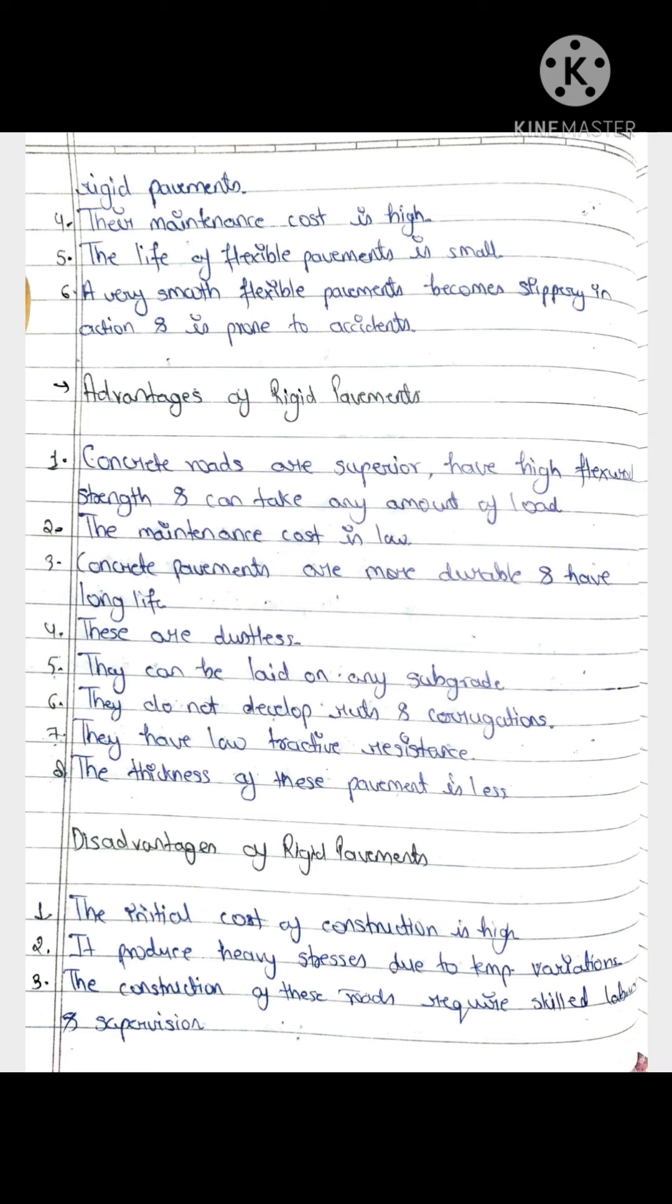The disadvantages: First, the initial cost of construction is high. Second, it produces heavy stress due to temperature variation. When there is change in temperature, there is a lot of stress. Third, the construction of these roads requires skilled labor and supervision. Rigid pavement requires high skilled labor and supervision.